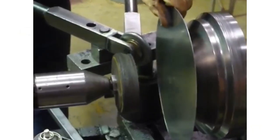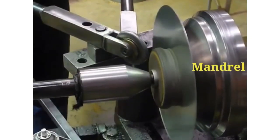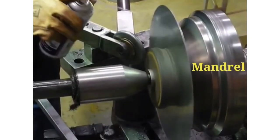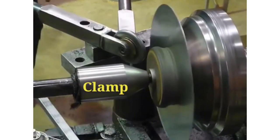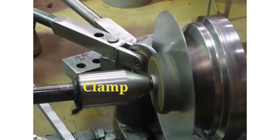The spinning tool, usually a rigid roller tool, presses the blank against the mandrel, establishing the blank to take the shape of the mandrel.